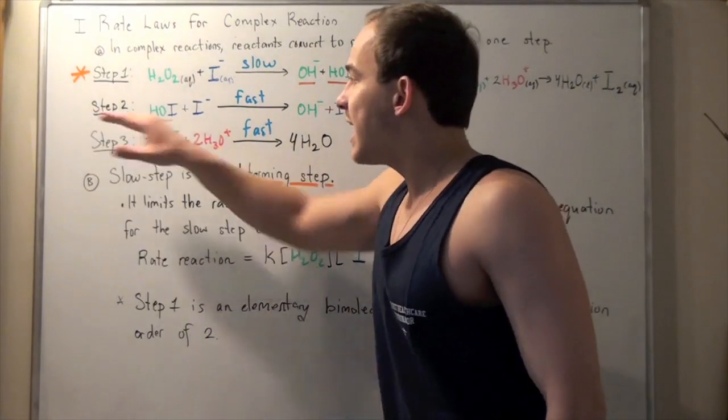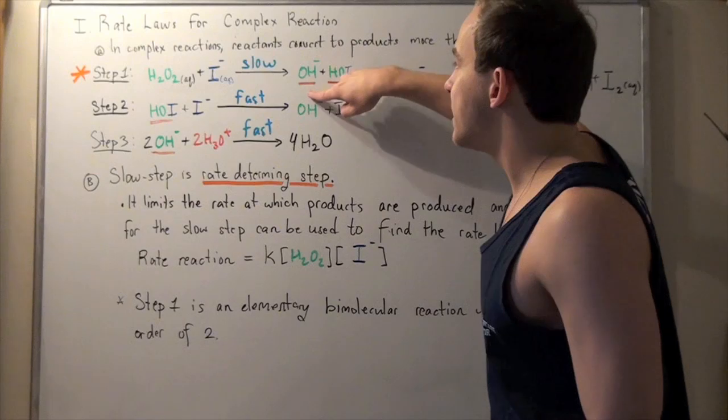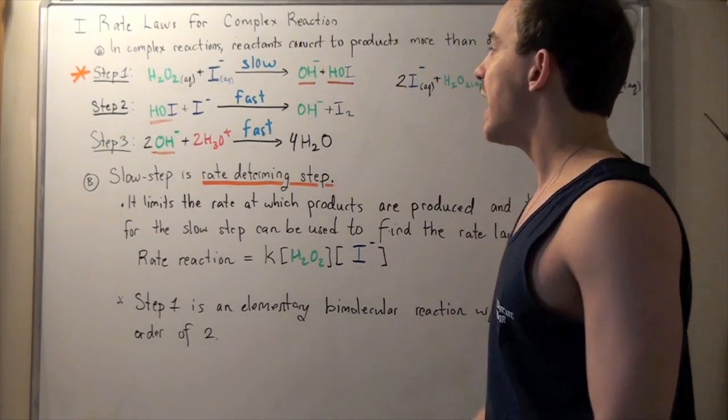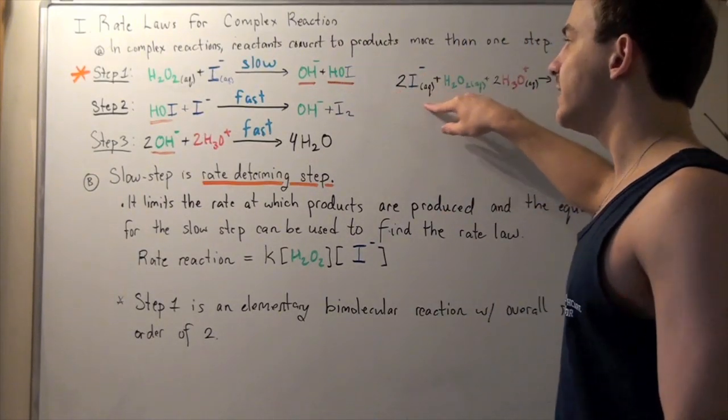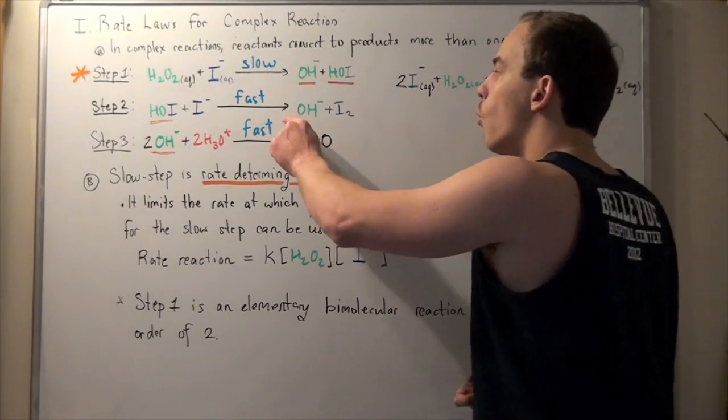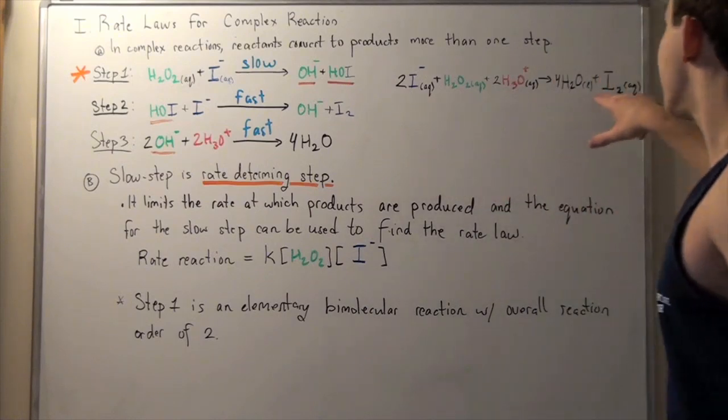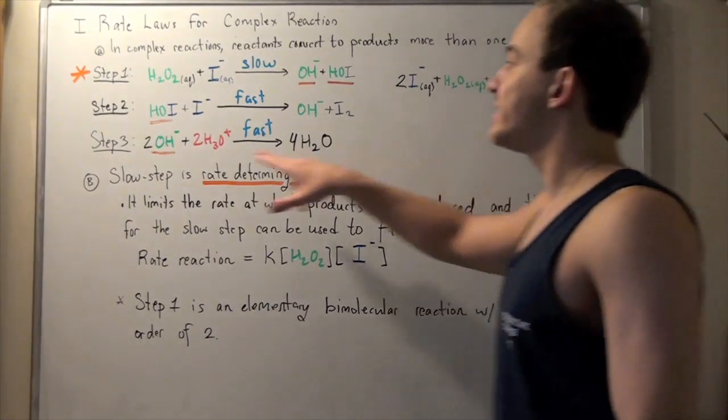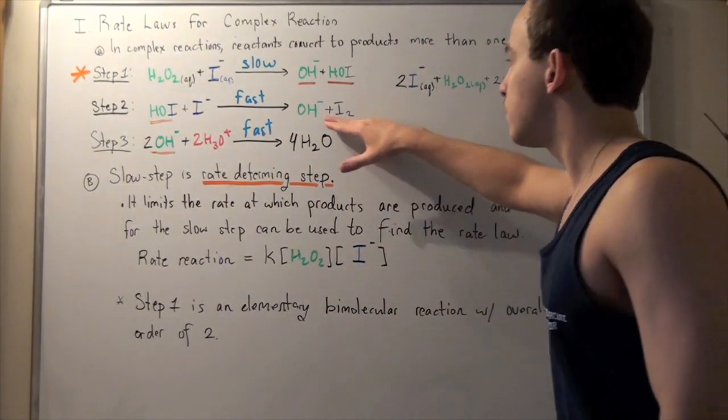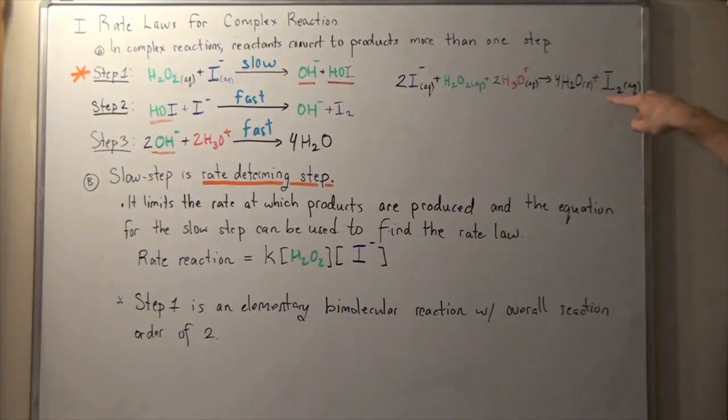Now, the second step is the following. This intermediate, or this intermediate, reacts with one mole reactant to produce, again, one mole of hydroxide and one of our products. Now, notice that this is one of our products. So, step two is responsible for producing this product, namely, this guy.